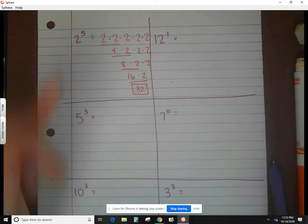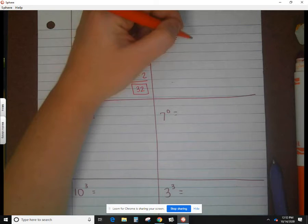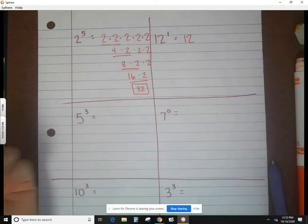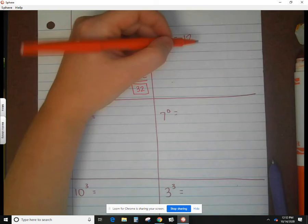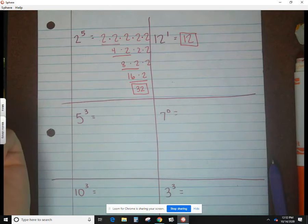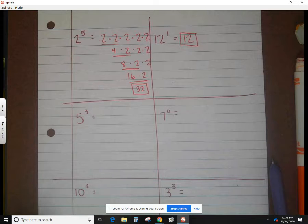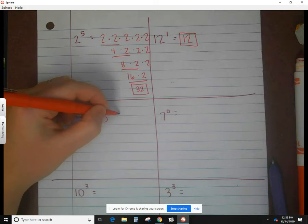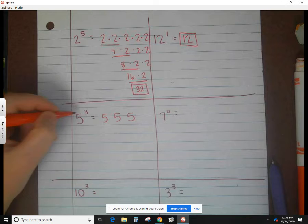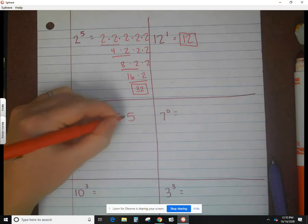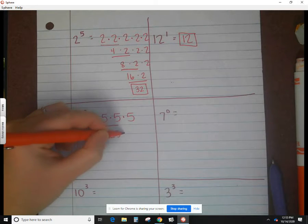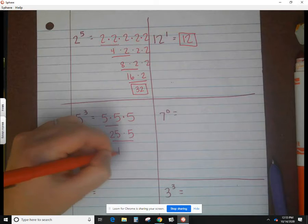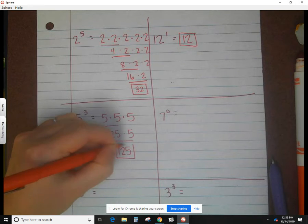12 to the first power means 12 multiplied one time. I'm only going to write it down one time, and I don't have anything to multiply it by. When you have something to the first power, you keep the same number. Five to the third power - our base is five, so we're multiplying five three times because our exponent tells us to do that. I can fill in my multiplication symbols. Five times five is 25, and 25 times five is 125.